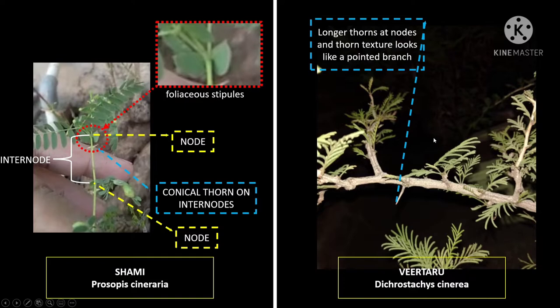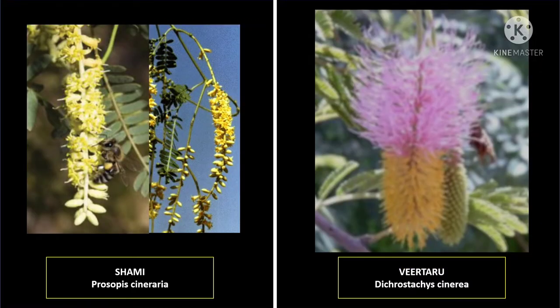Veertharu will not have foliaceous stipules — that is the second major identification pattern, usable on a small plant. The flower color identification feature is only available once the tree has grown big. But it is useful to know: shami will never have bicolored flowers like veertharu, which has pink and yellow. Shami will only have yellow colored flowers.